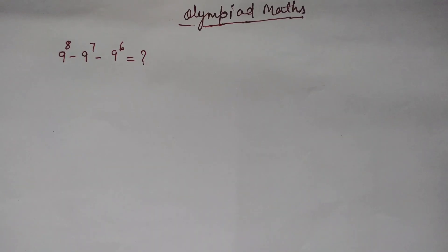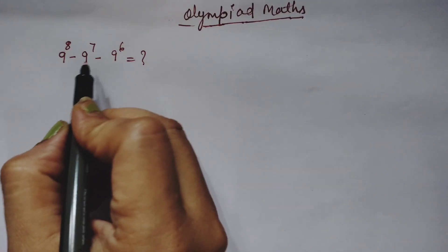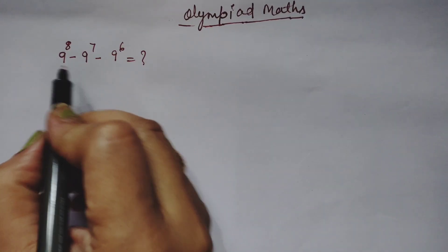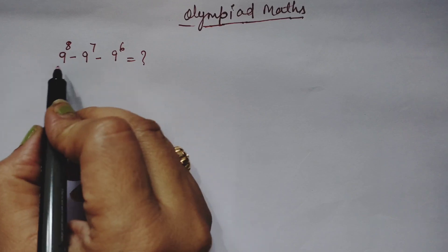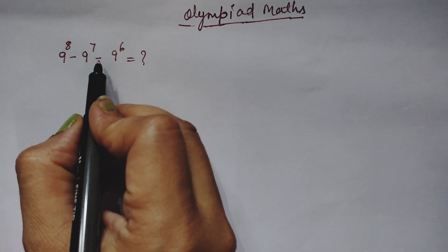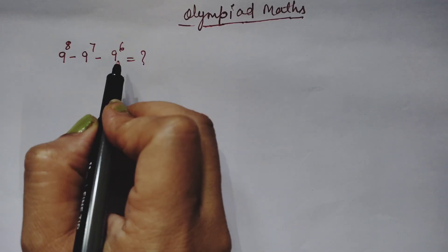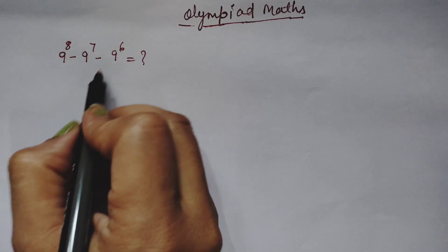Hello everyone, welcome to my YouTube channel. Today we are going to solve an Olympiad math question. This is an exponential question where we need to find the value of 9 raised to the power 8, plus 9 raised to the power 7, minus 9 raised to the power 6.